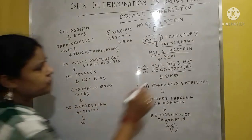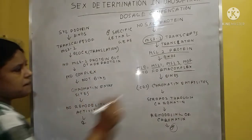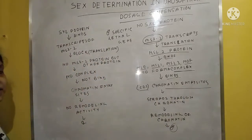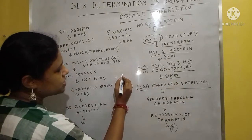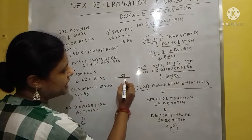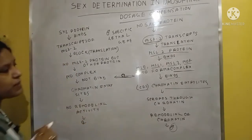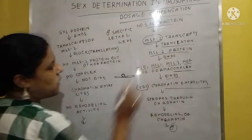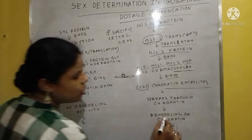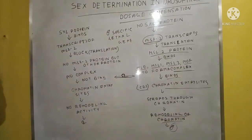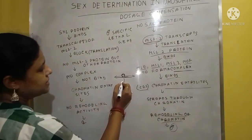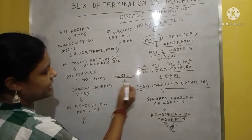This MSL complex binds to the CES — chromatin entry sites. It binds to the chromatin fiber and spreads in both directions, covering the chromatin. This causes remodeling of the chromatin fiber — remodeling activity of the chromatin fiber is offered — which promotes the male process.